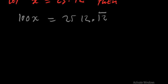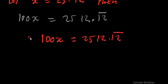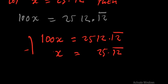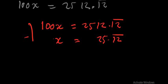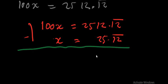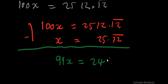Now we subtract: 100X = 2512.12̄ minus X = 25.12̄. When we subtract, we get 99X = 2487.